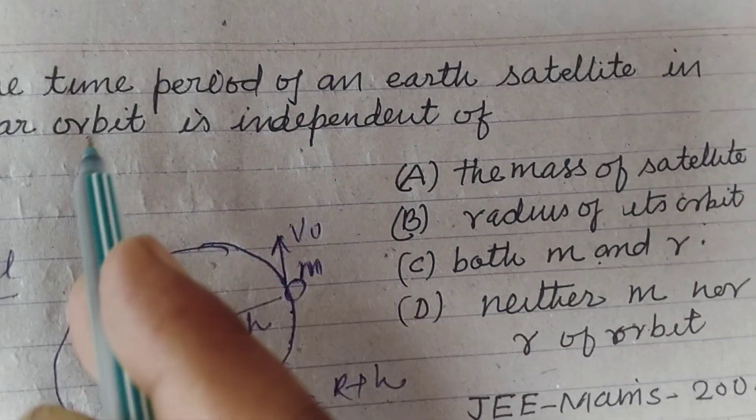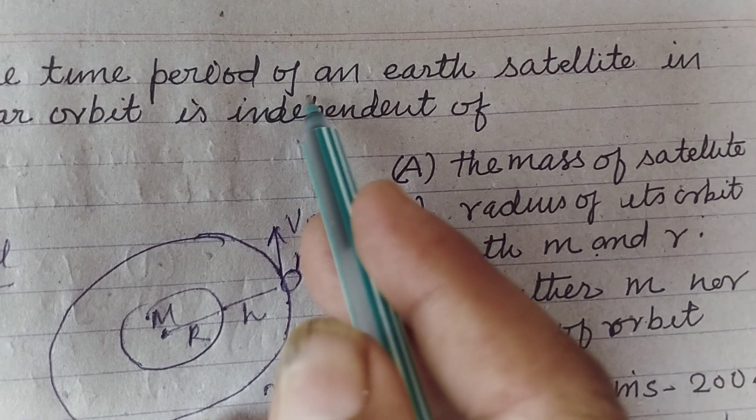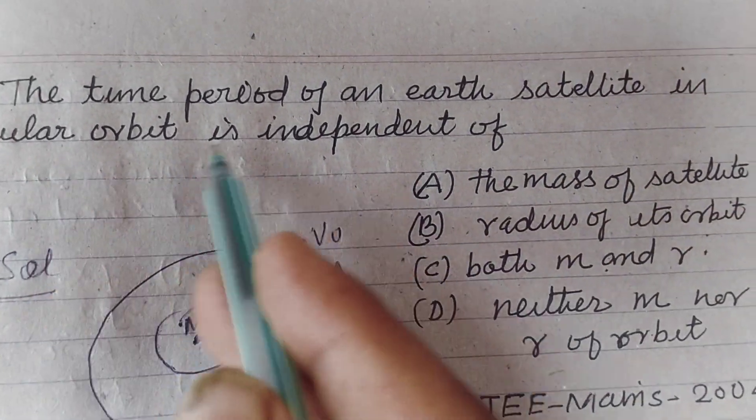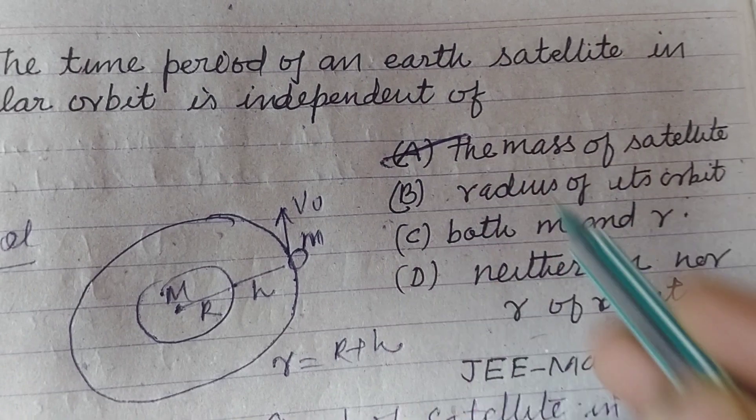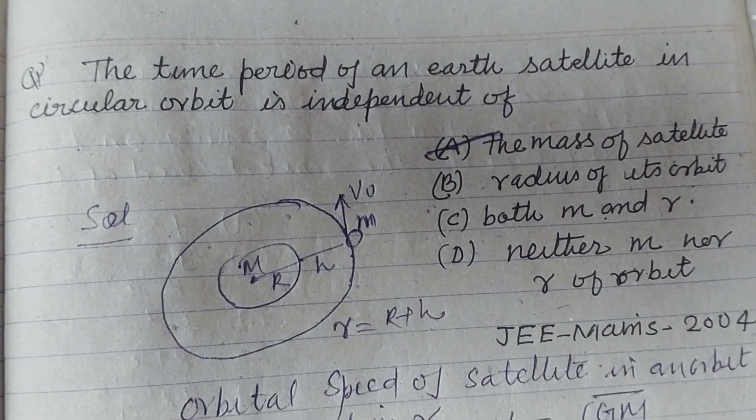Here the time period of an Earth satellite in circular orbit is independent of the mass of the satellite. So option A is correct.